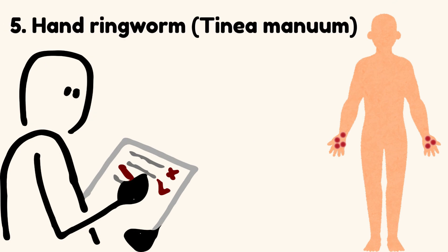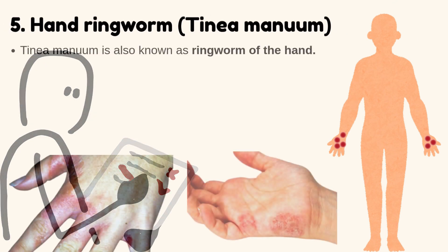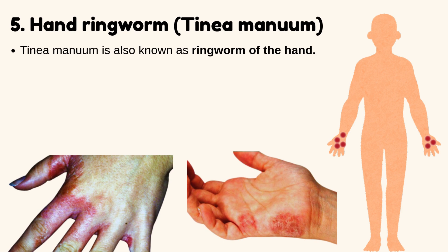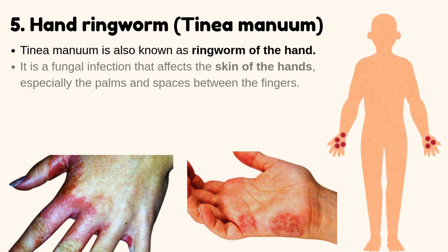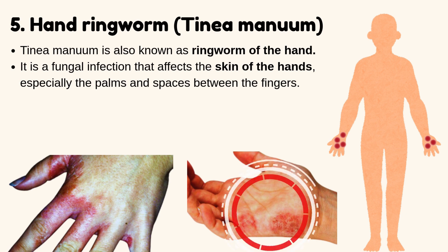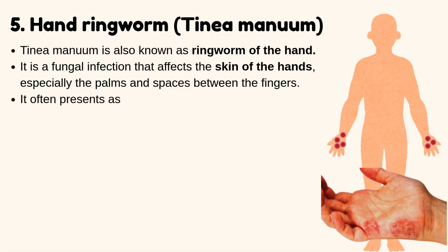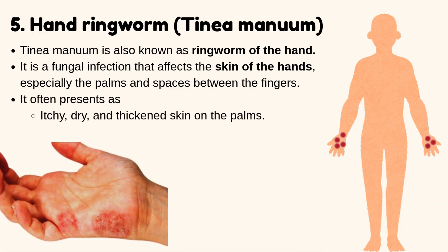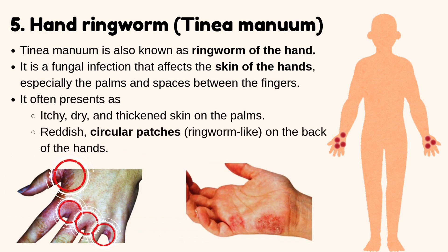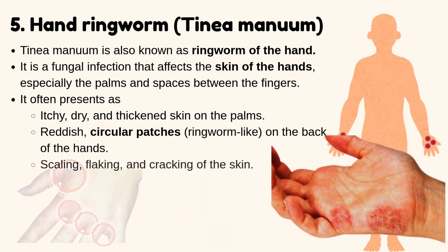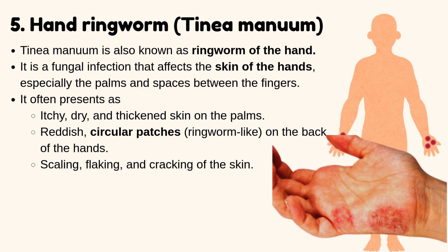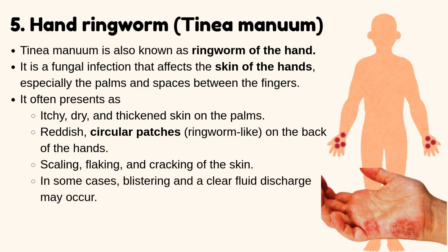Hand ringworm — Tinea manuum. Tinea manuum, also known as ringworm of the hand, is a fungal infection that affects the skin of the hands, especially the palms and spaces between the fingers. It often presents as itchy, dry, and thickened skin on the palms; reddish, circular patches on the back of the hands; scaling, flaking, and cracking of the skin. In some cases, blistering and a clear fluid discharge may occur.